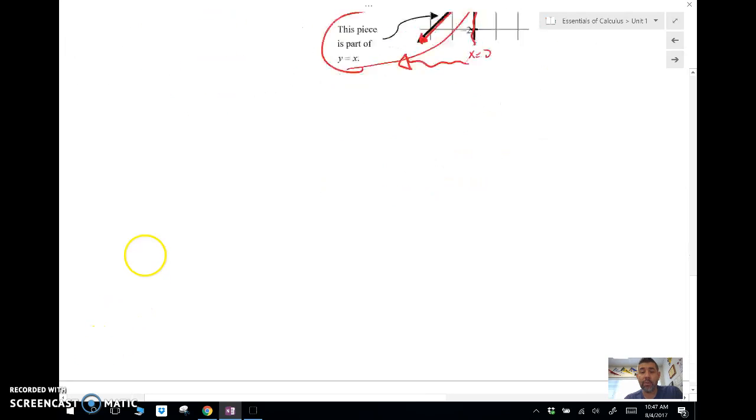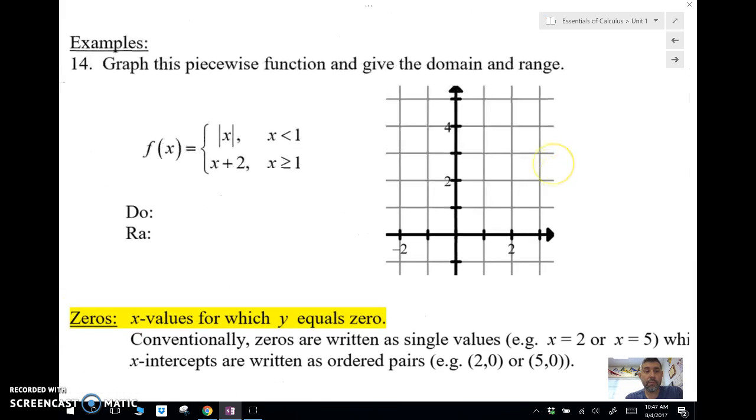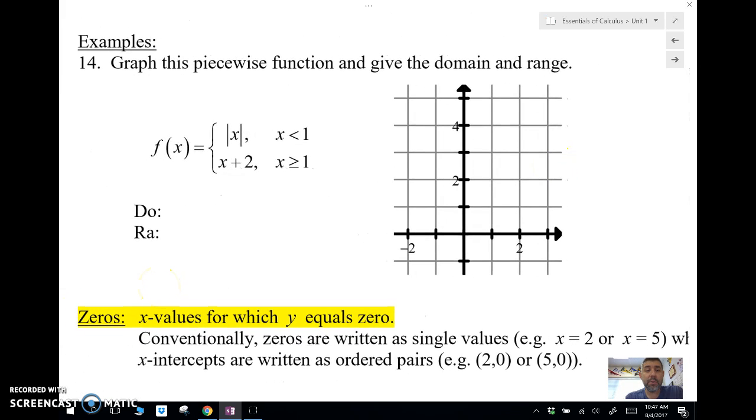Let's go ahead and look at another example where we'll graph one of these piecewise functions. Let's graph this piecewise function and we'll give the domain and range. So the domain is pretty easy for this because the domain's kind of given. x less than 1 and x greater than or equal to 1. So that's all values. So we'll say all real numbers, or you can write it as negative infinity to infinity. For the range, I'm going to graph it first. We've got the absolute value function for x less than 1. So here's x equal to 1.